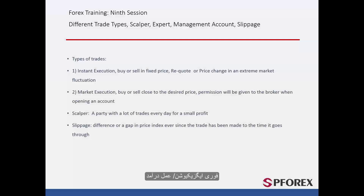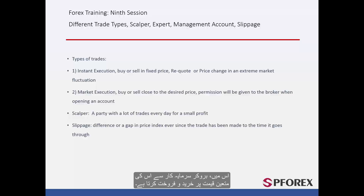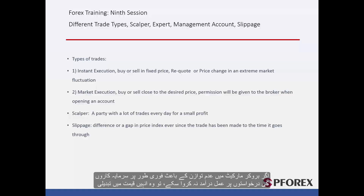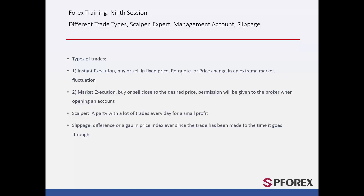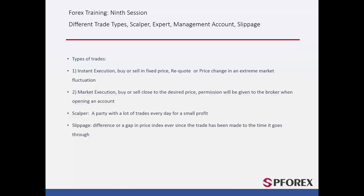First we will look at instant execution. Here the broker will process buy or sell requests from an investor at the exact price they made. Requests from the investor to sell and close orders are handled the same way. If a broker is not able to execute the investor's request immediately due to market fluctuations, then the broker will provide the investor with the price change or a requote. Reliable brokers intend to apply their customers' requests in float markets as fast as possible.